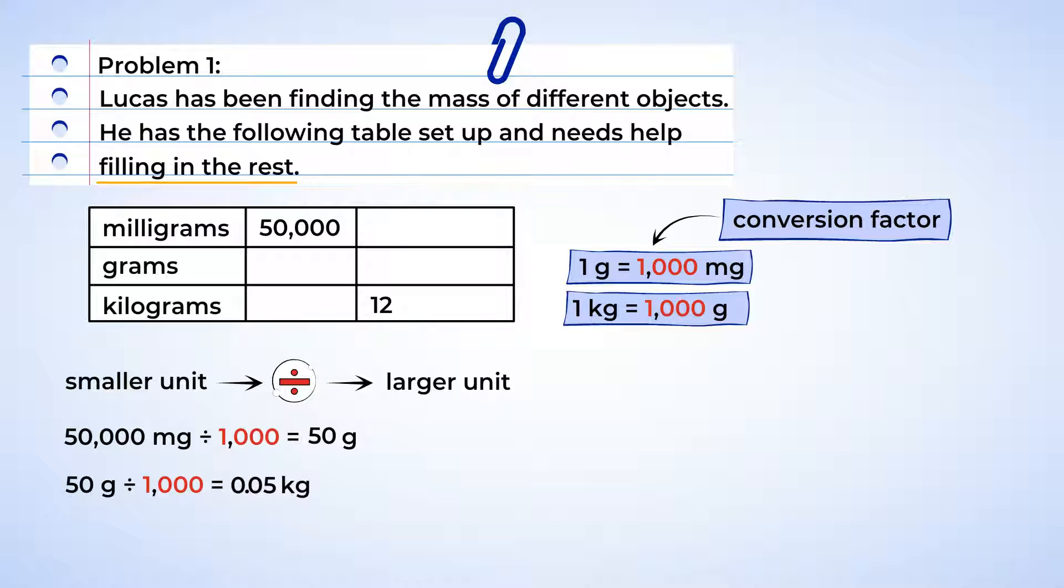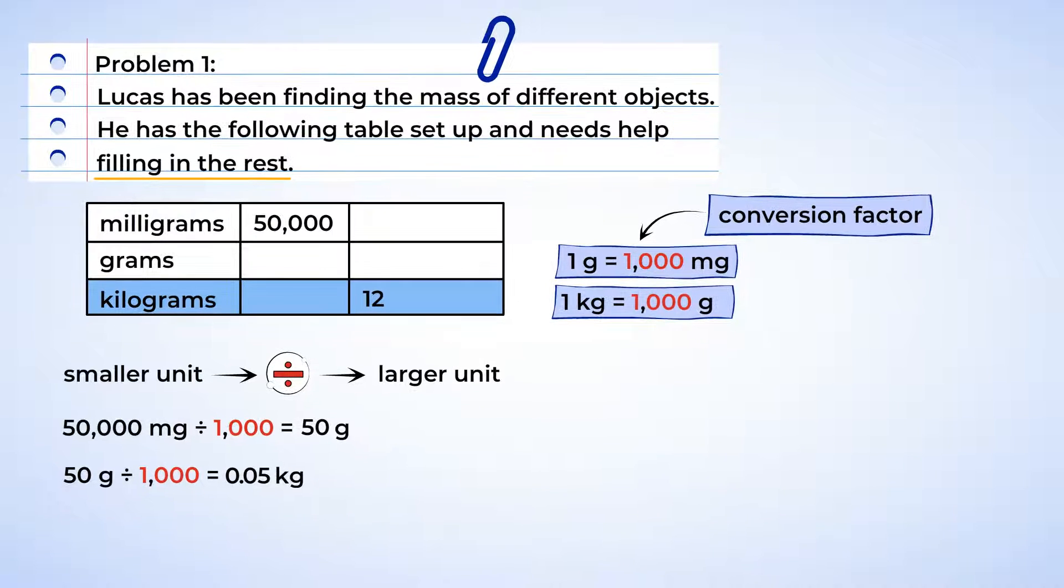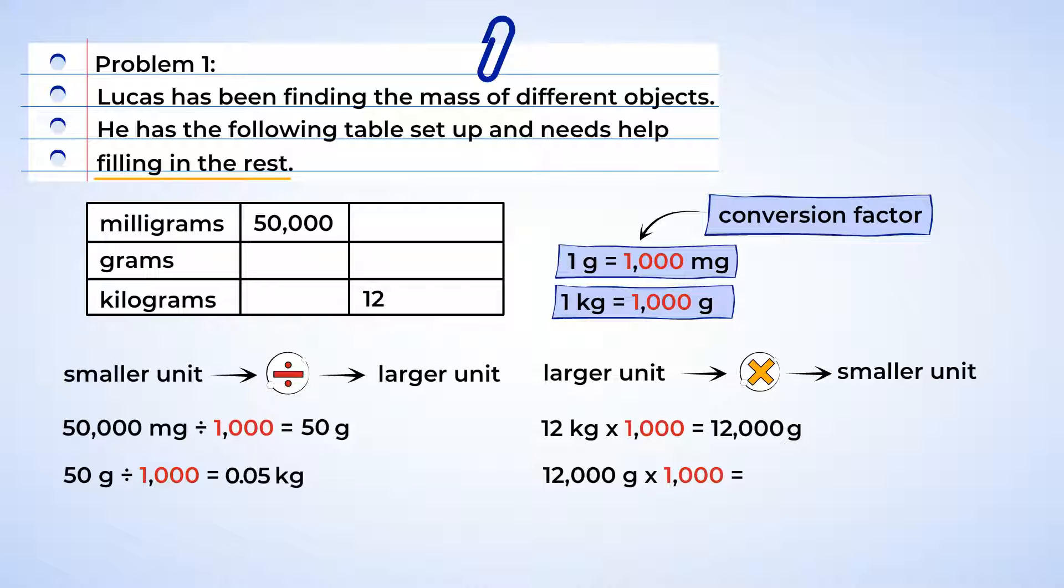Look. The next value in the table has kilograms. Now, when we convert a larger unit into smaller units, we want to multiply by the conversion factor. So, to convert 12 kilograms into grams, we need to multiply by 1,000. And this time, we're going to move the decimal point to the right three places. All right. 12,000 grams. So we can multiply by 1,000 again to find how many milligrams that's equal to. And it's equivalent to 12 million milligrams. And now, Lucas can fill out his table.